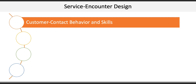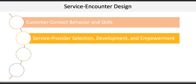The second element is service provider selection, development, and empowerment. This is simply hiring the right person, training them appropriately, and giving them authority to make decisions based on what they feel is right — to have control over their work, to take risks, learn from mistakes, and promote change.